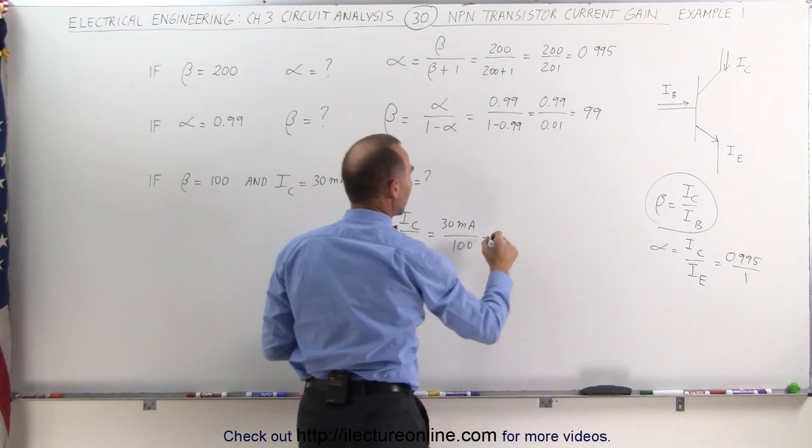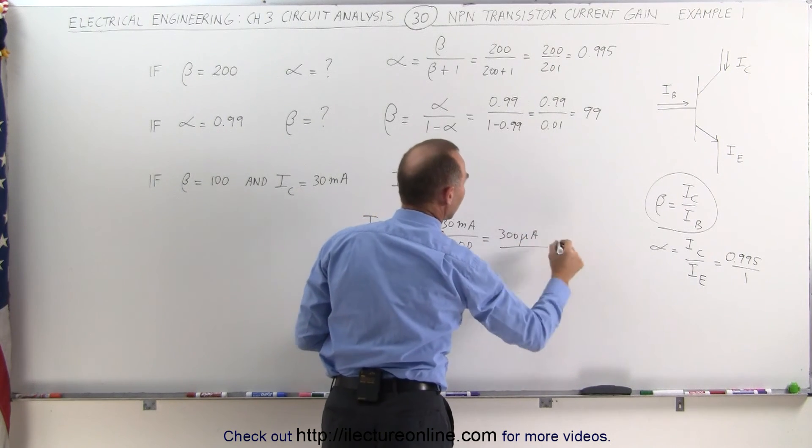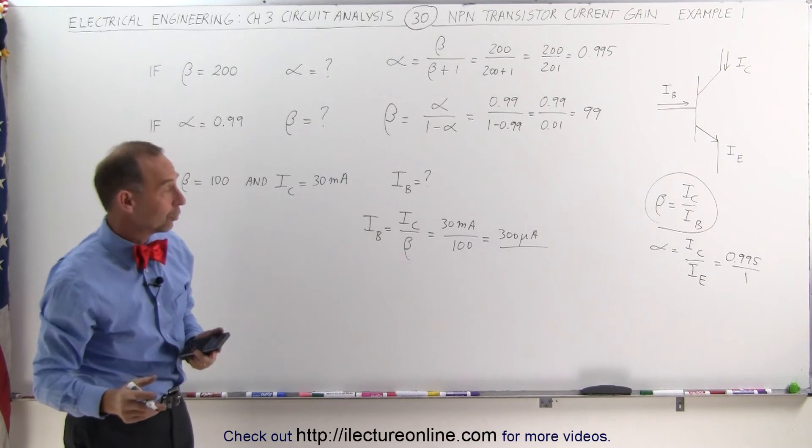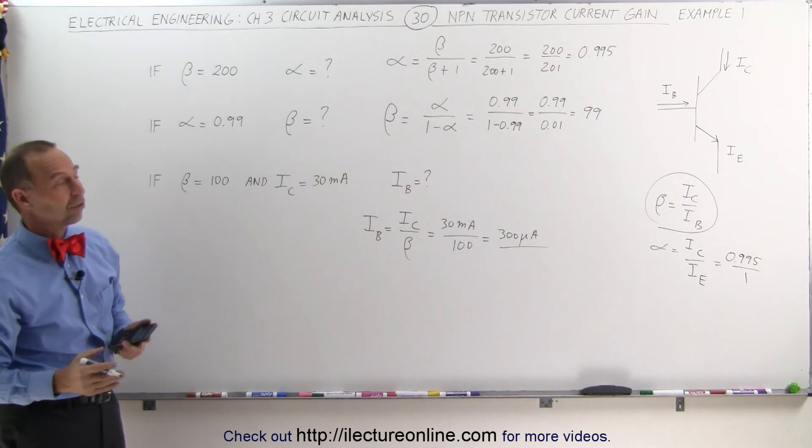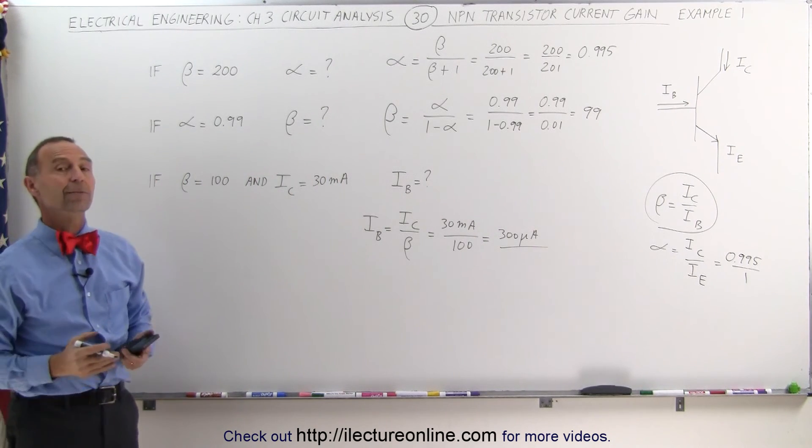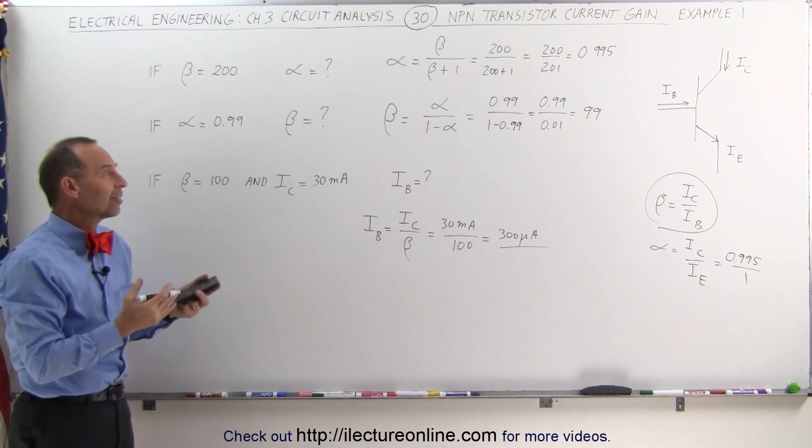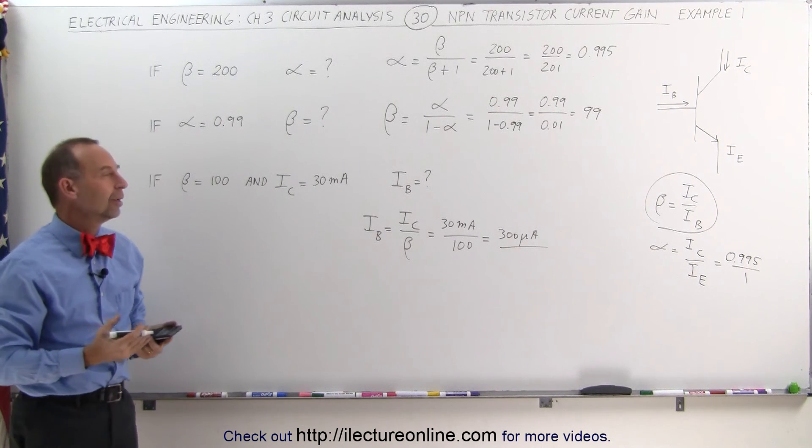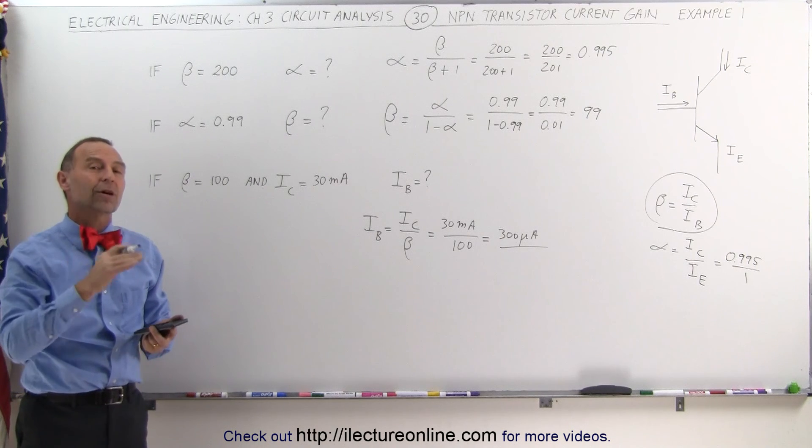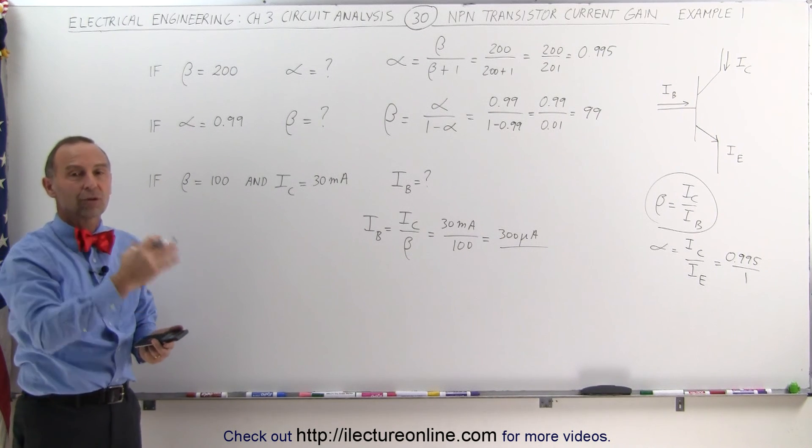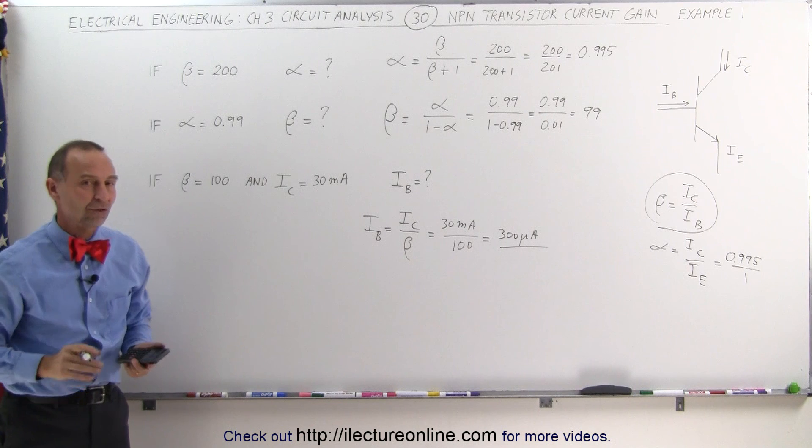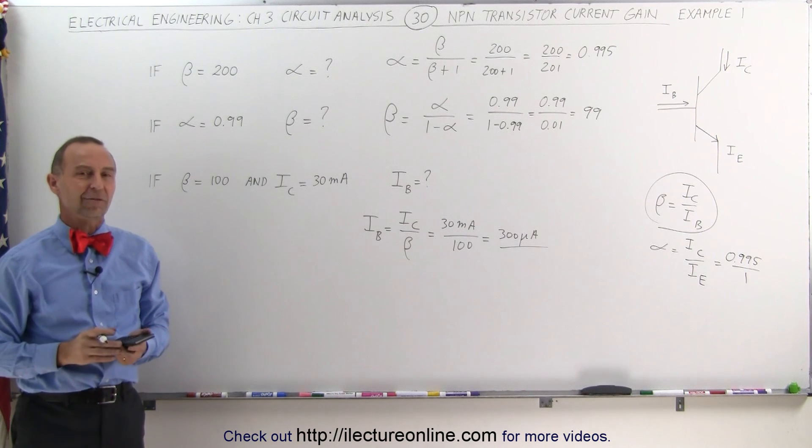And that would be 300 microamps would then be the base current that produces a current of 30 milliamps through the transistor from the collector to the emitter. So that's some simple examples of getting more familiar with the current gain. And I will show you some more complicated examples where I actually do some circuit analysis on transistor circuits. That's coming up in the next several videos.